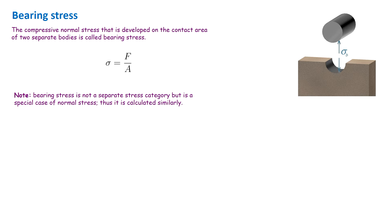Note that bearing stress is not a separate stress category but is a special case of normal stress. So it is calculated as force divided by the area at which the force is acting. Bearing stress is typically shown by sigma sub b, where the subscript b stands for bearing.